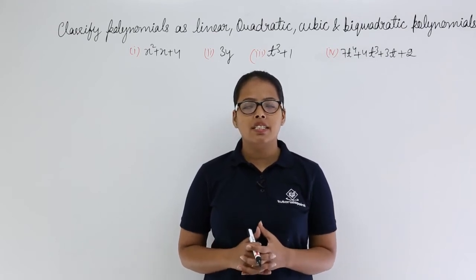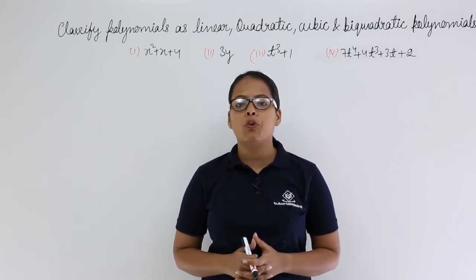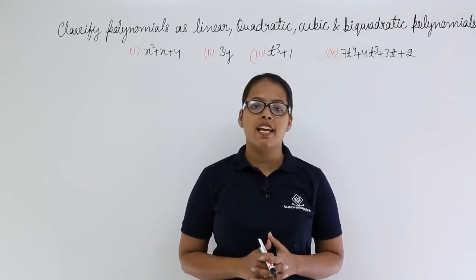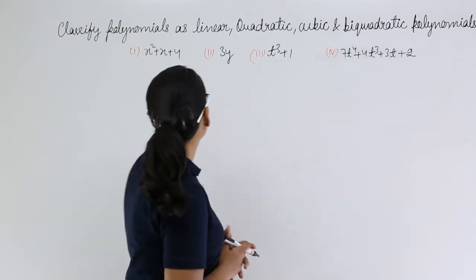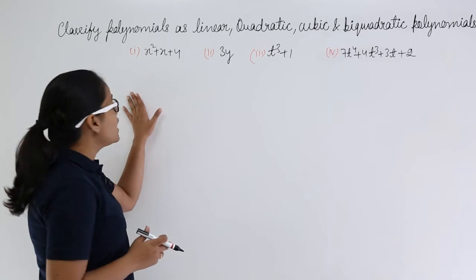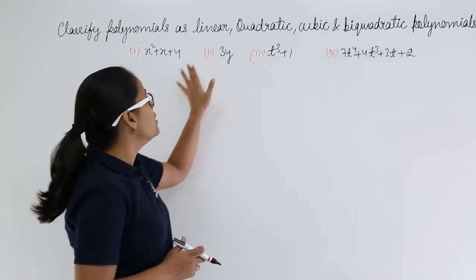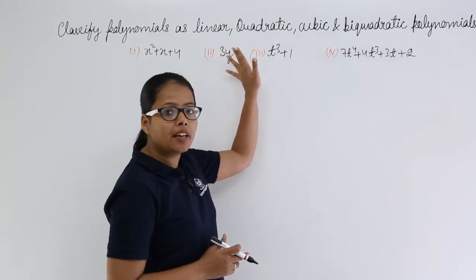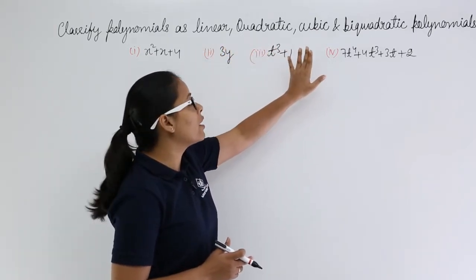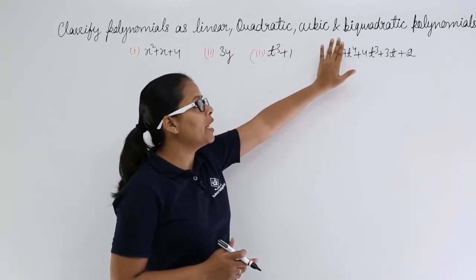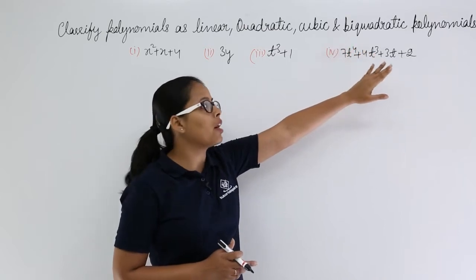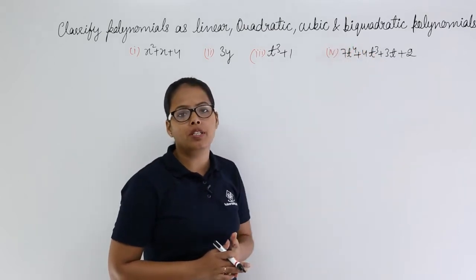Hello guys, let's discuss this problem which says classifying following polynomials as linear, quadratic, cubic and bi-quadratic polynomials.